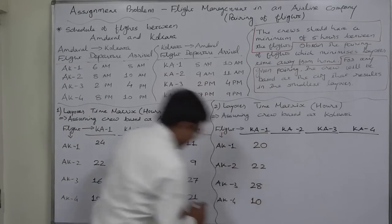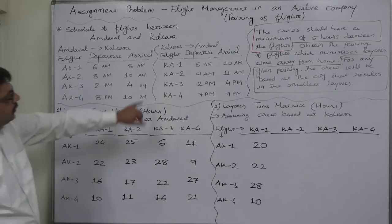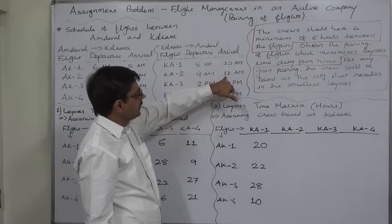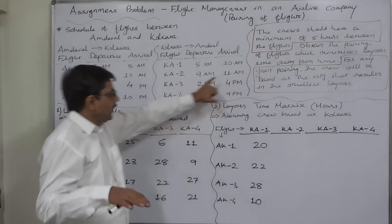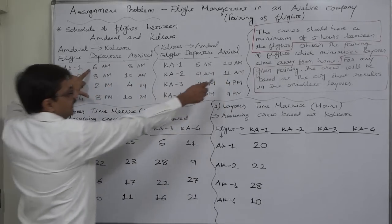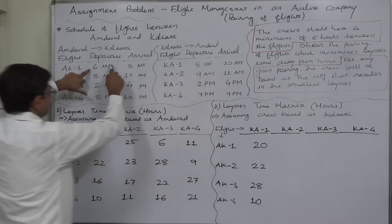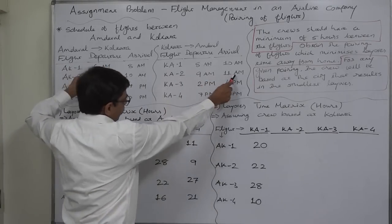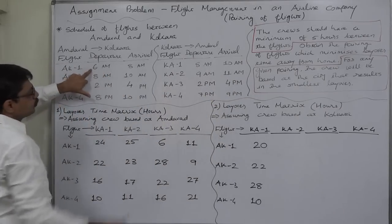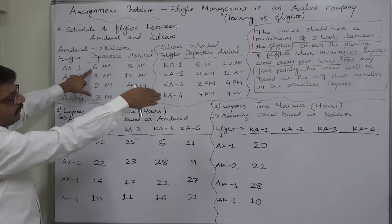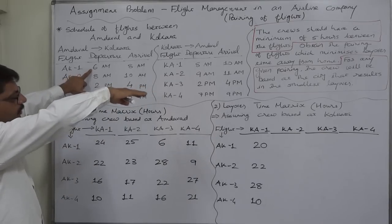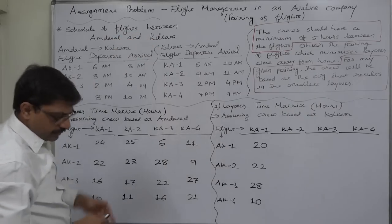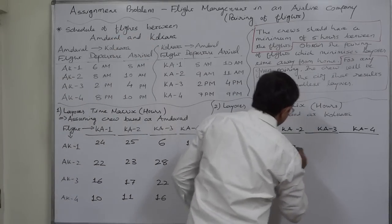Now KA2 starts from Kolkata at 9 a.m. and reaches Ahmedabad at 11 a.m. today. If it becomes AK1 at 6 a.m. tomorrow, the layover is 11 a.m. today to 6 a.m. tomorrow. In 1 hour it will be 12 noon, in 12 hours it will be 12 midnight — 1 plus 12 is 13, plus 6 gives 19 hours of layover time.